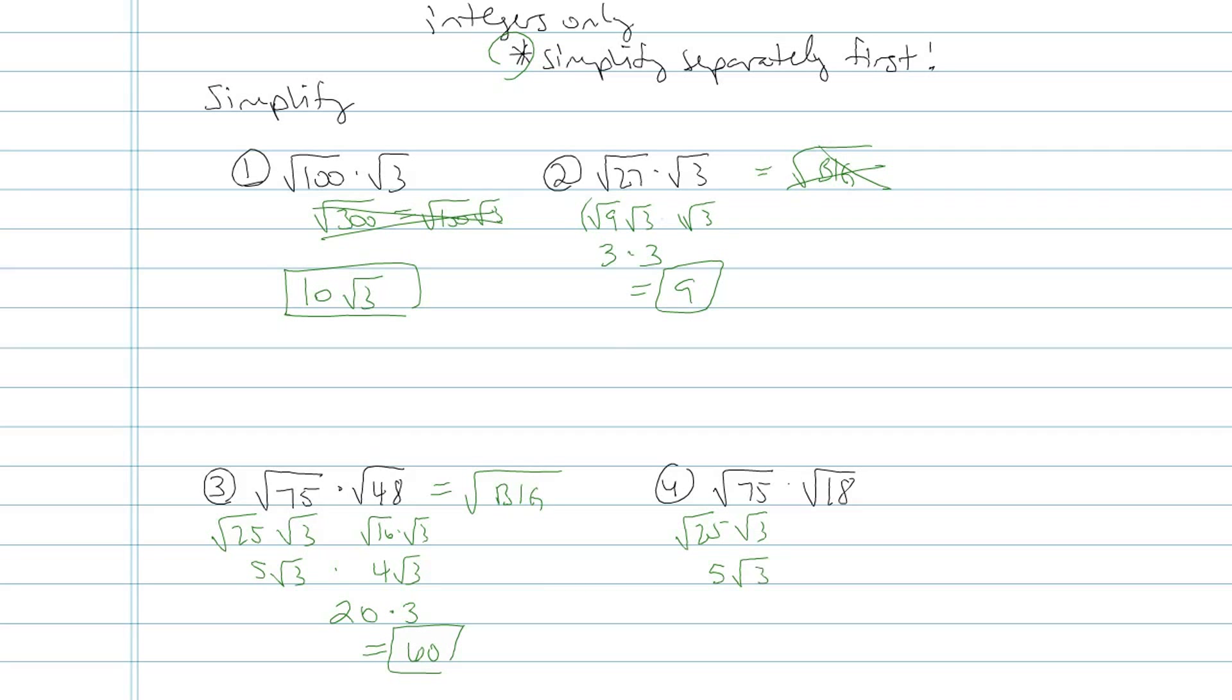18 I know is root 9 times root 2, so that'll be 3 root 2. And when I multiply that, my integer number is 5 times 3 is 15. And then when I'm multiplying my square root, square root of 3 times square root of 2, that's just going to become root 6.